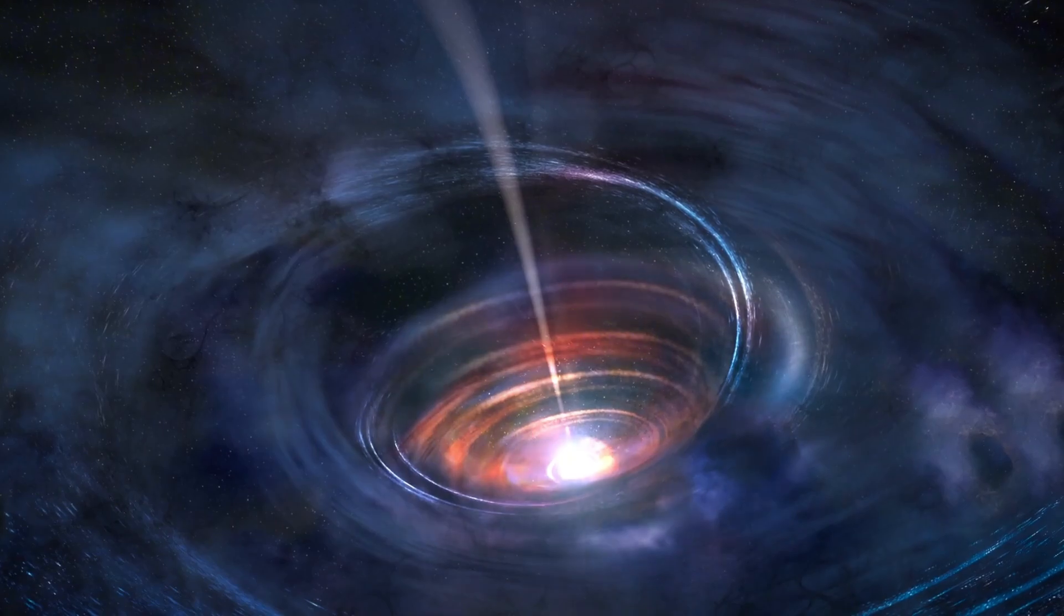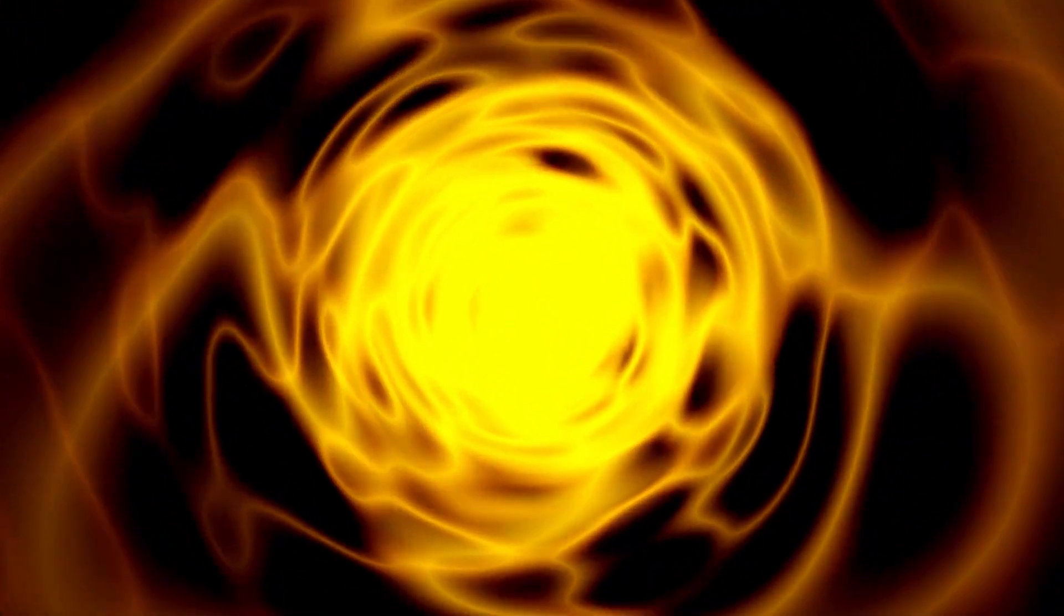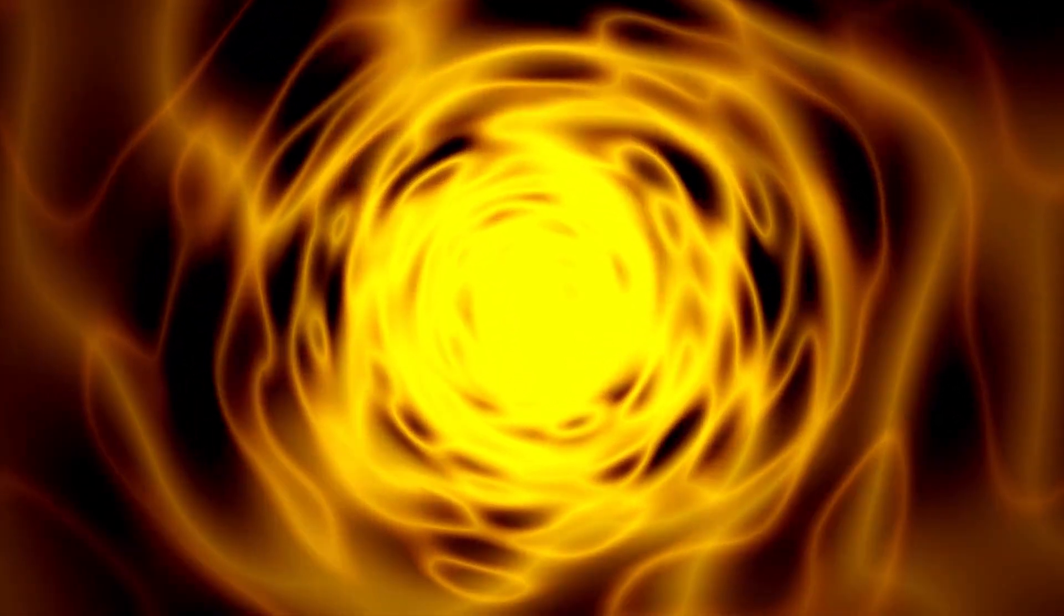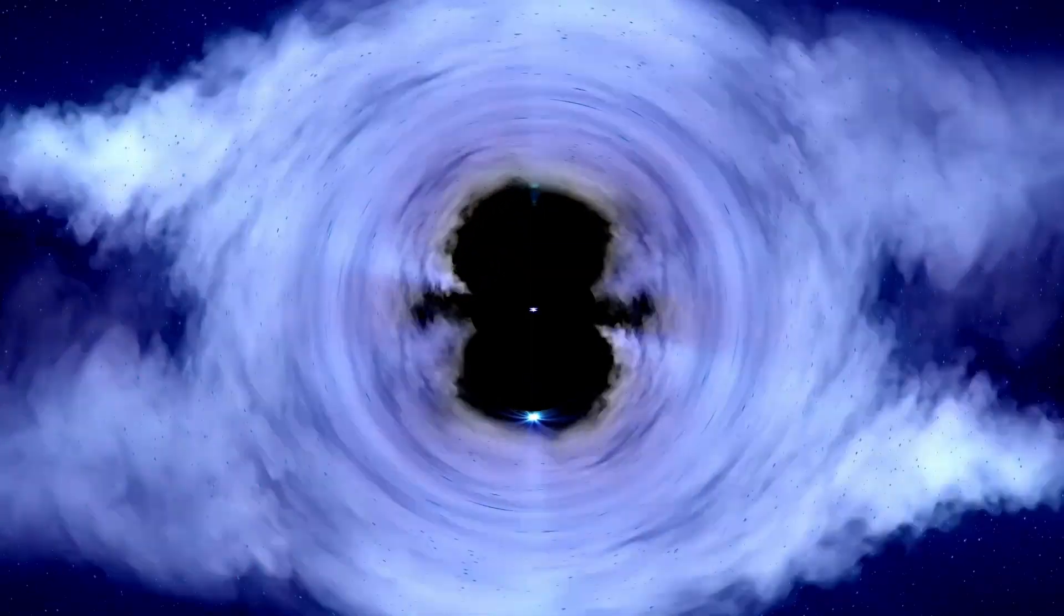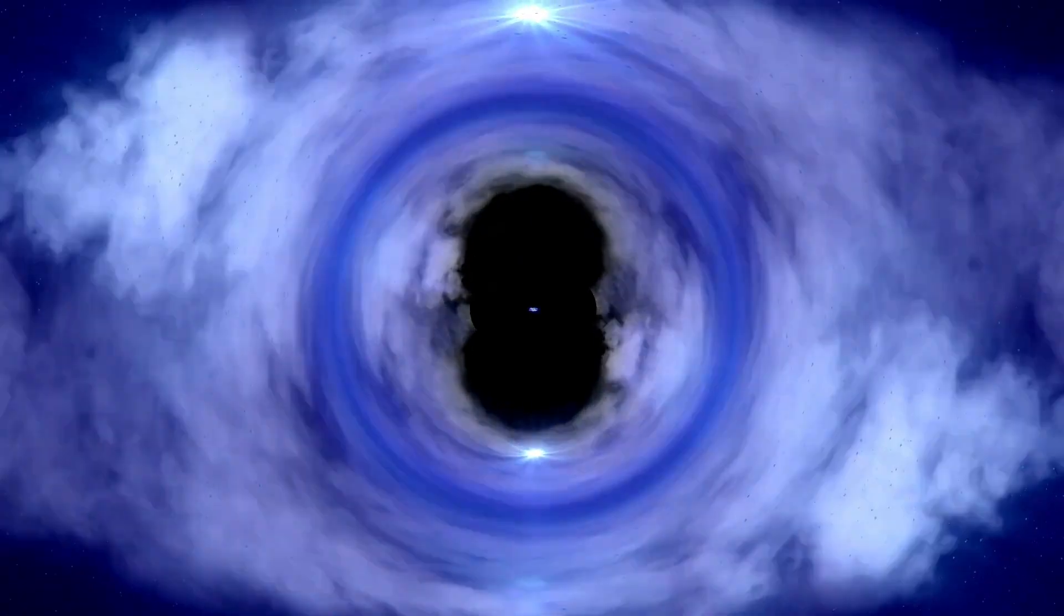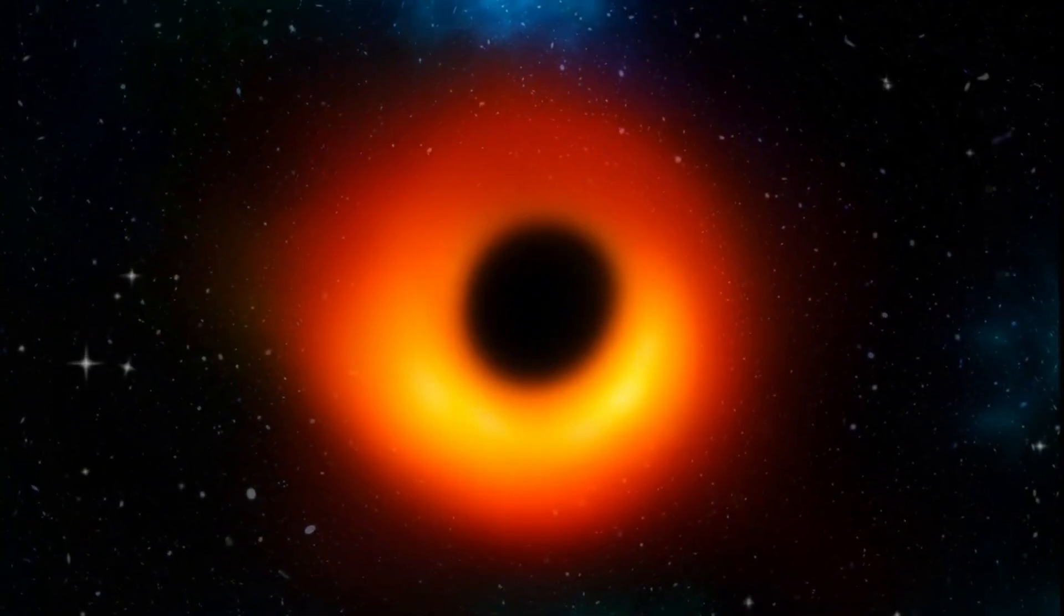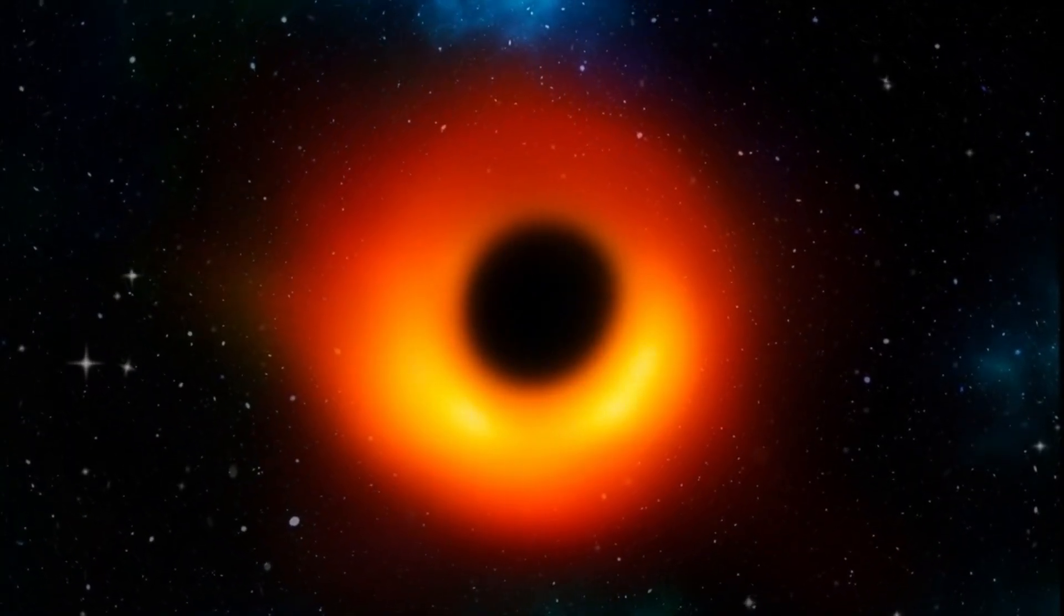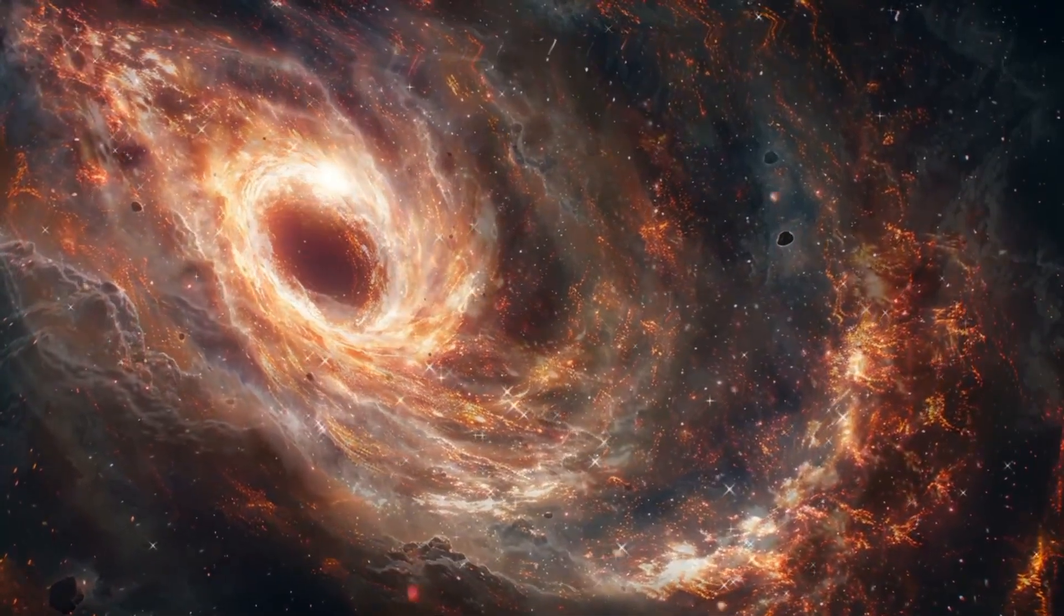As we delve deeper into the mysteries of black holes, we encounter intriguing phenomena that challenge our grasp of the universe. One of the most compelling aspects is the concept of the no-hair theorem, which posits that black holes can be characterized by just three observable properties: mass, charge, and angular momentum. According to this theorem, black holes do not retain any other information about the material that fell into them. This has profound implications for our understanding of information and entropy in black hole physics.